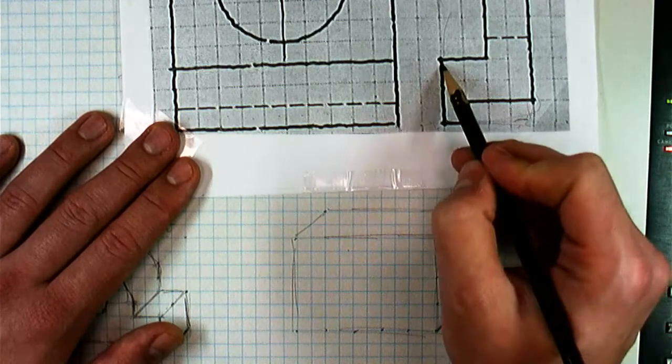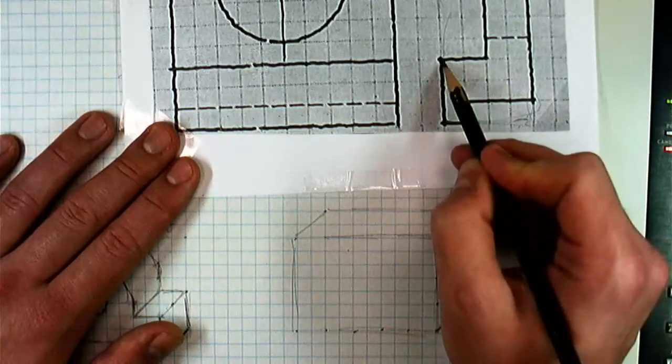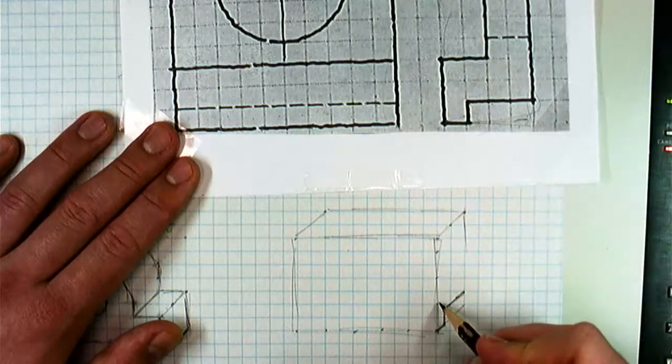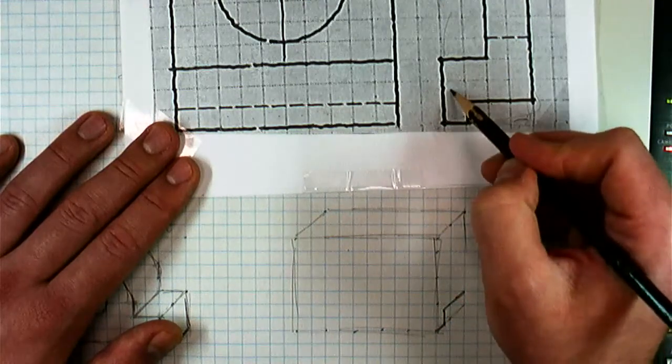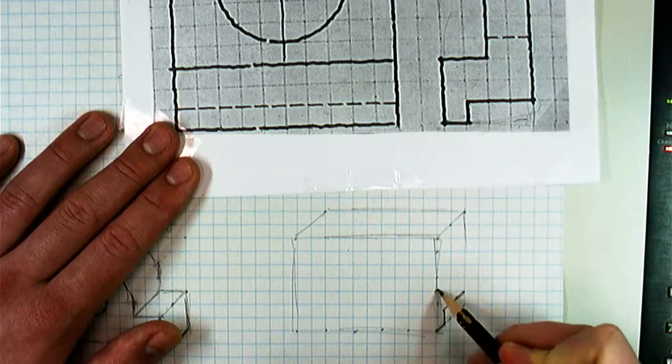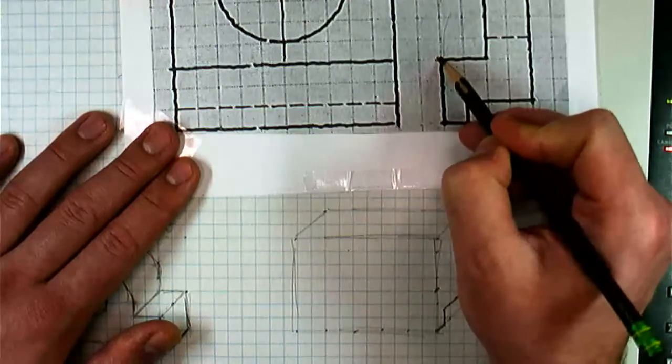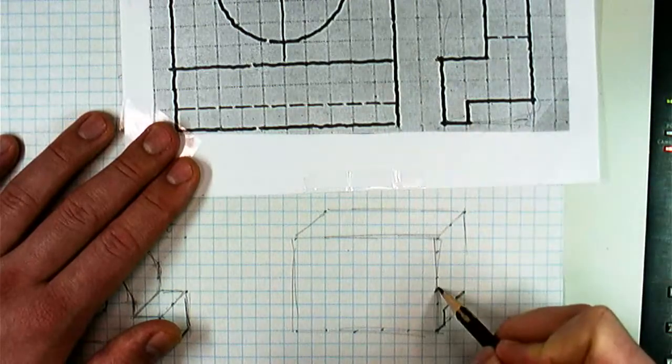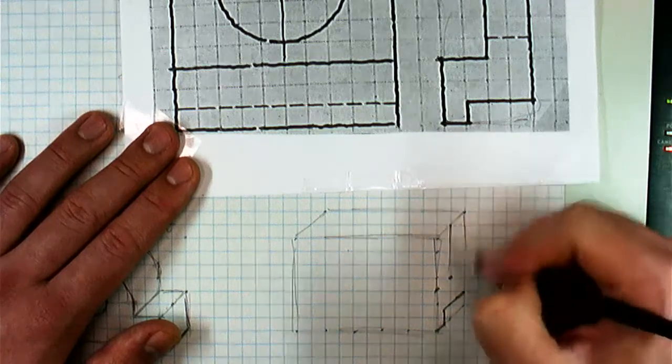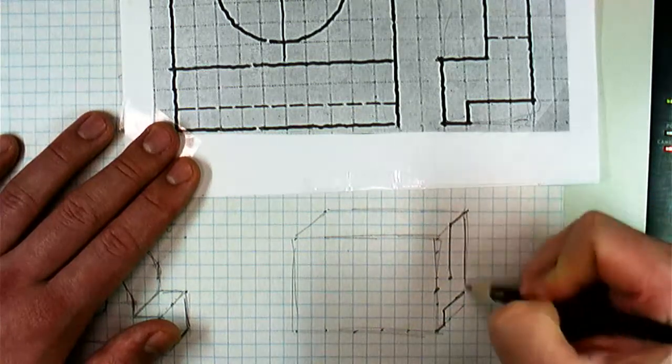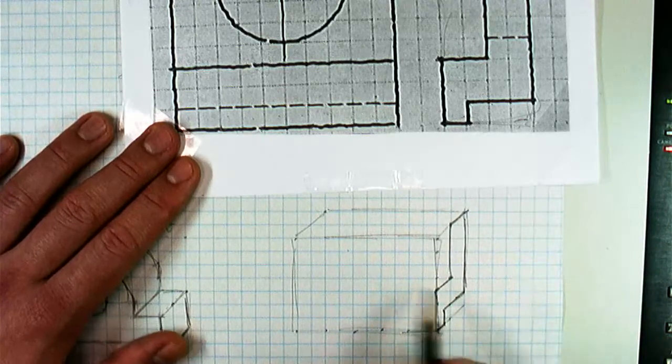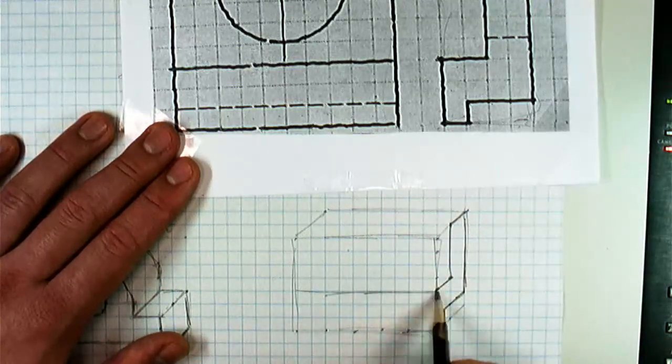And we're going to do the same thing up here to get this part that's jutting back in our right side view. So this one goes back two squares, so that's easy. Well, let's find the vertical position. One, two, three squares. So one, two, three. That is that point. And then I'm going to go back two, which is really just a whole square because half scale, right? And then that's going to come up to there. And that gives us our general side profile. And now I can bring these across.